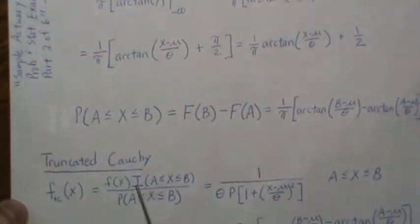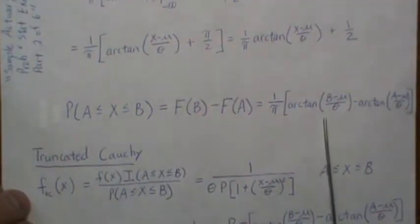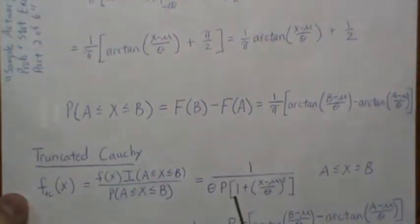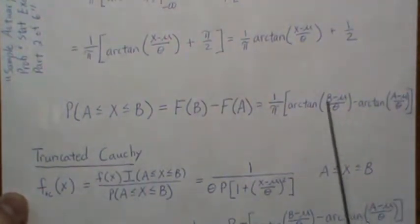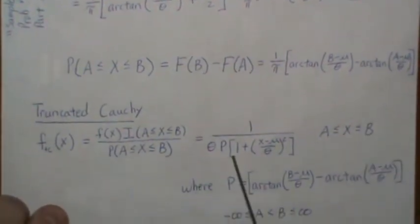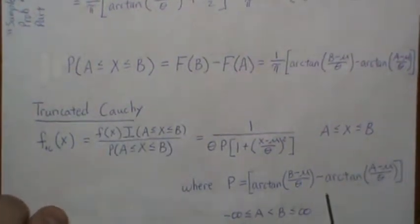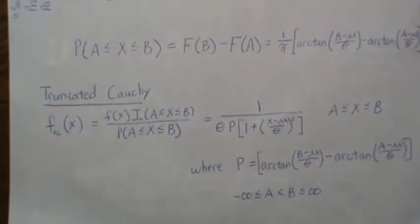So when we take the F and divide it by this probability, the 1 over pi cancel and we're left with this. Now the theta, if I wish I'd have put it between those two, because then that would have been the density for Cauchy. And P, I'm going to call this probability. And so where P is minus the 1 over theta, or 1 over pi. And so this is it. This is a truncated Cauchy distribution.